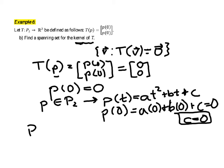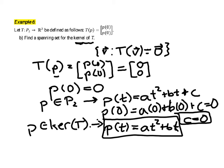So if p is in the kernel of this transformation, then it's got to have the form p(t) must look like this: some number a times t squared plus some number b times t. But the constant term is 0, so we just drop that. So far we know that the polynomials in the kernel all have this form right here.